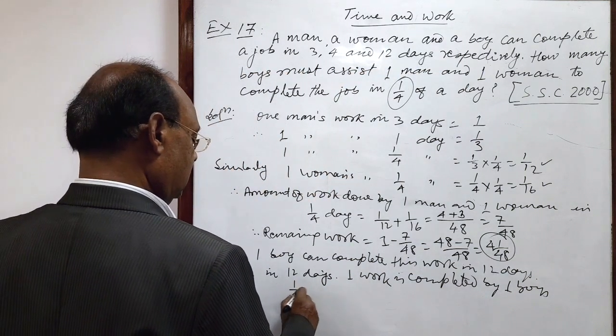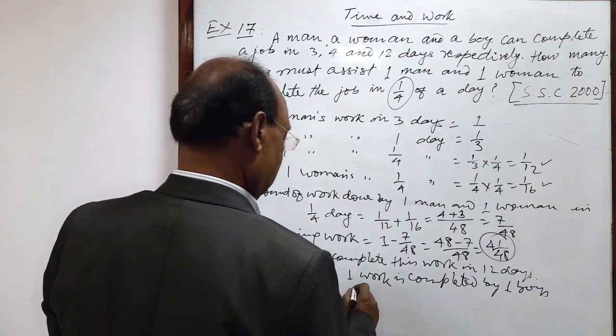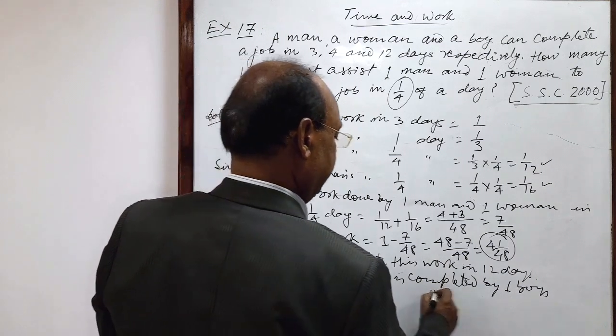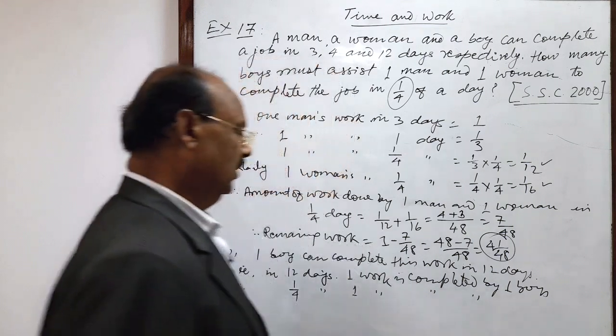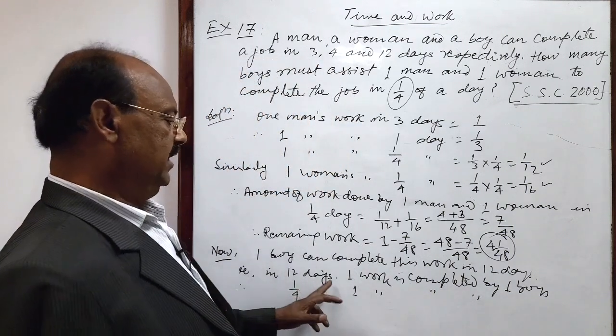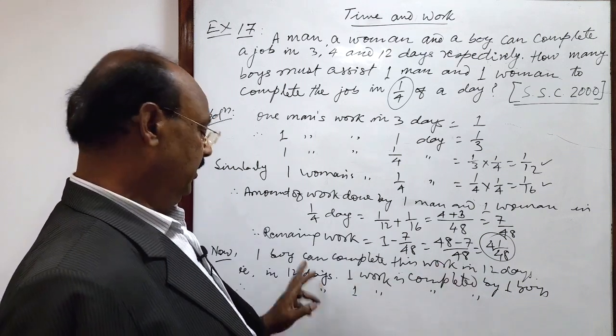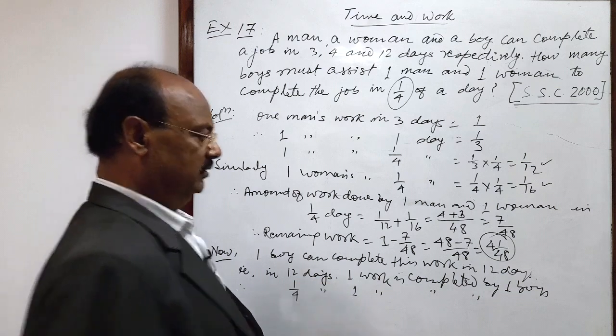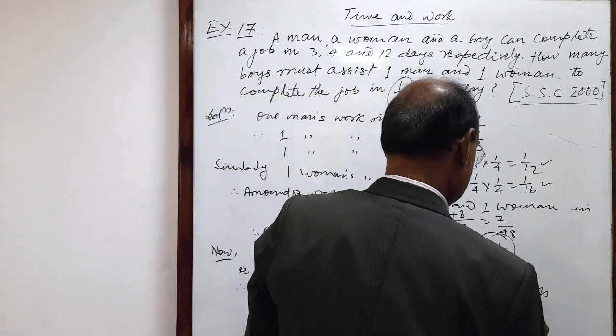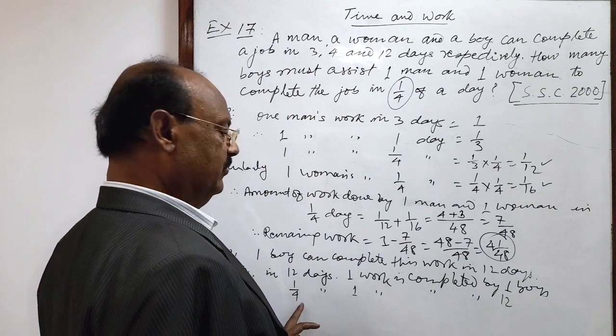In 1 by 4 days, 1 work is completed by, by unitary method, in 12 days, 1 boy is required, in 12 days, 1 boy is required, so in 1 day, how many? Multiplied, again 12, so this is 12 boys will be required, and in 1 by 4 days...